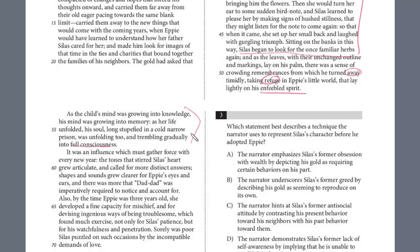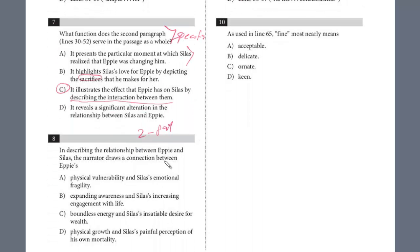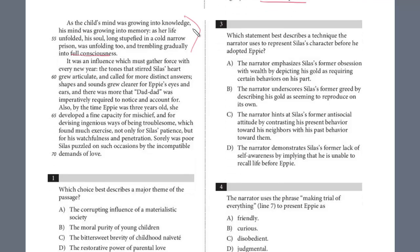And this is the answer, lines 53 to 57. So let's go back and read 8. That's really in what we just read describing how he was reemerging into life all because of this little girl. And you can see now that the answer for 8 is B. She really allowed him to expand his awareness and his increasing engagement for life. And let's just go back and look at it again just to reinforce it. As the child's mind was growing into knowledge, his mind was growing into memory. Her life unfolded and his soul, long stupefied, was unfolding too and trembling gradually into full consciousness. It's almost trembling because it's been so long and now he's slowly reemerging.